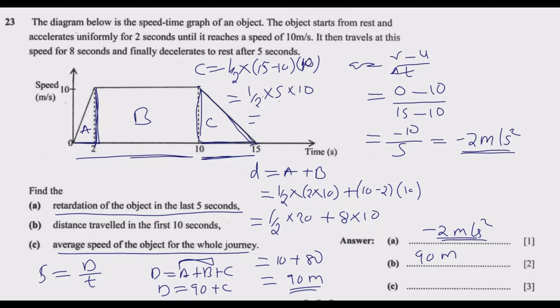We end up with half multiplied by 5 multiplied by 10. 5 times 10 is 50, divided by 2, which is 25 meters. The total distance D equals 90 plus 25, which equals 115 meters.